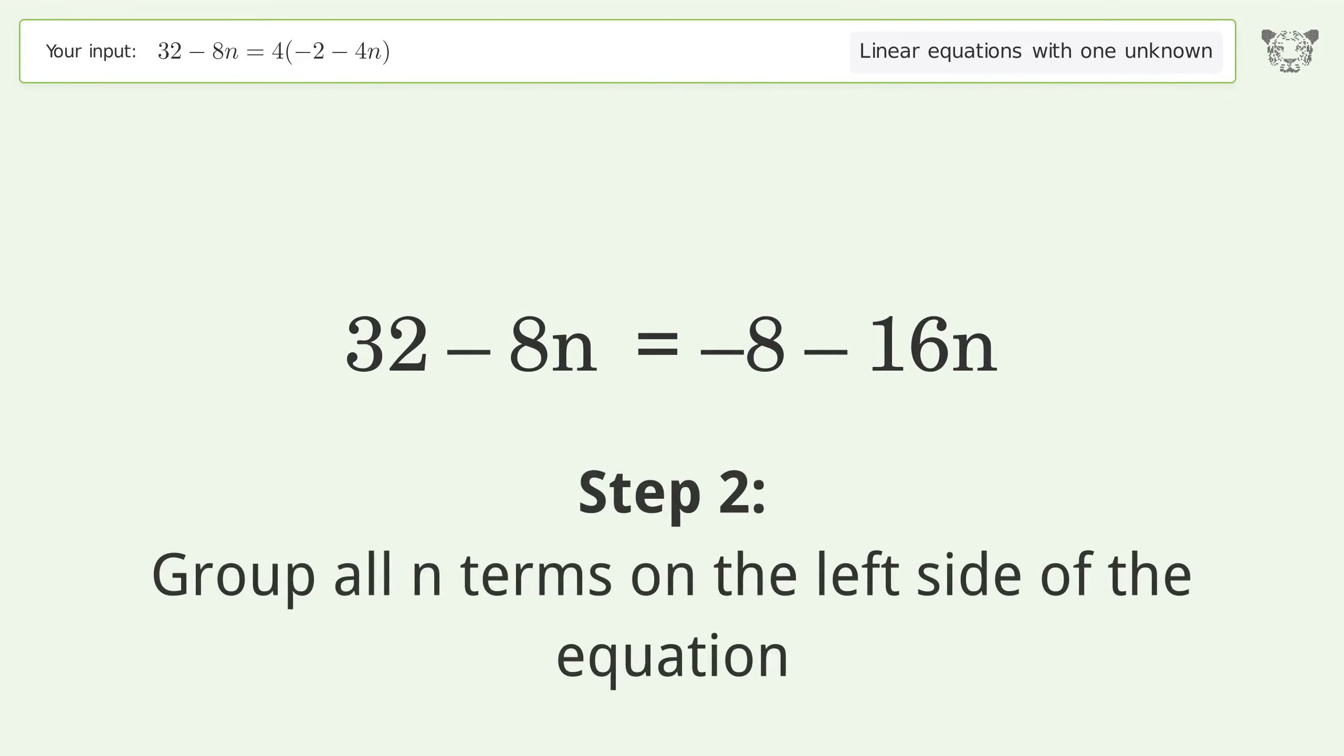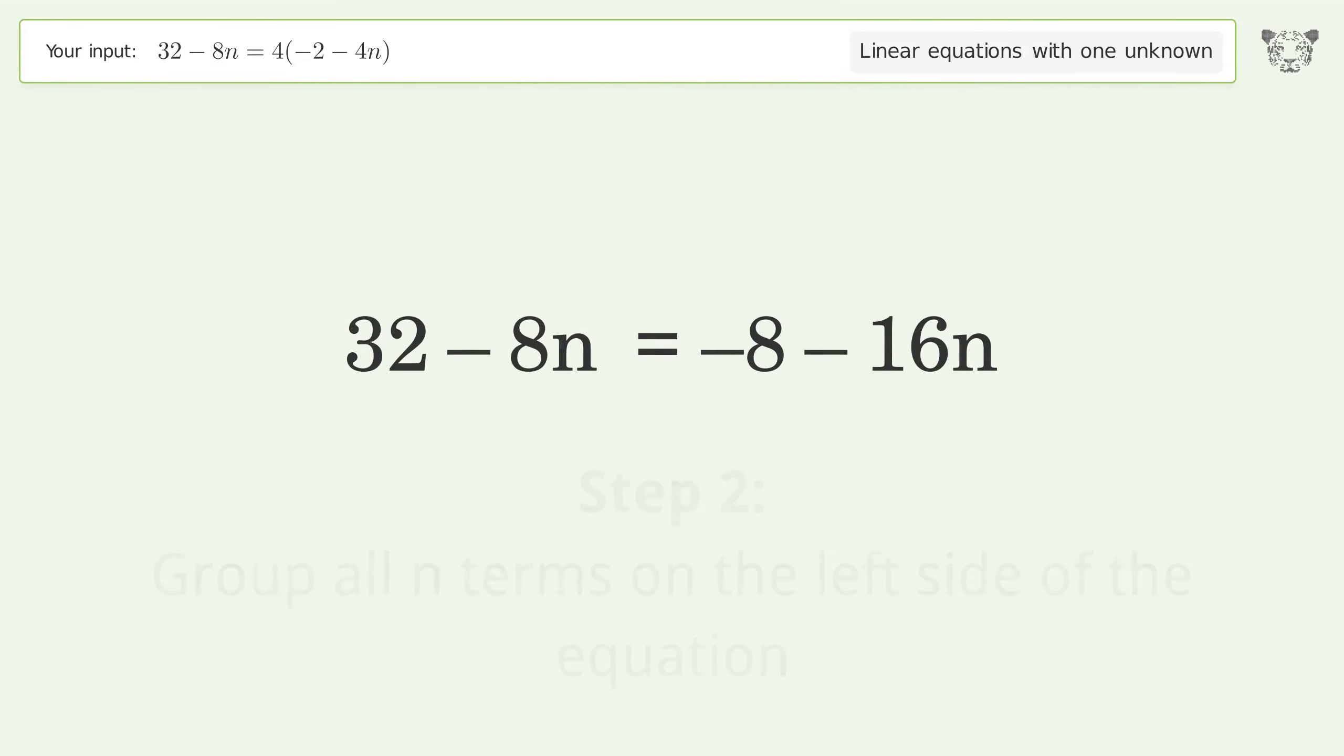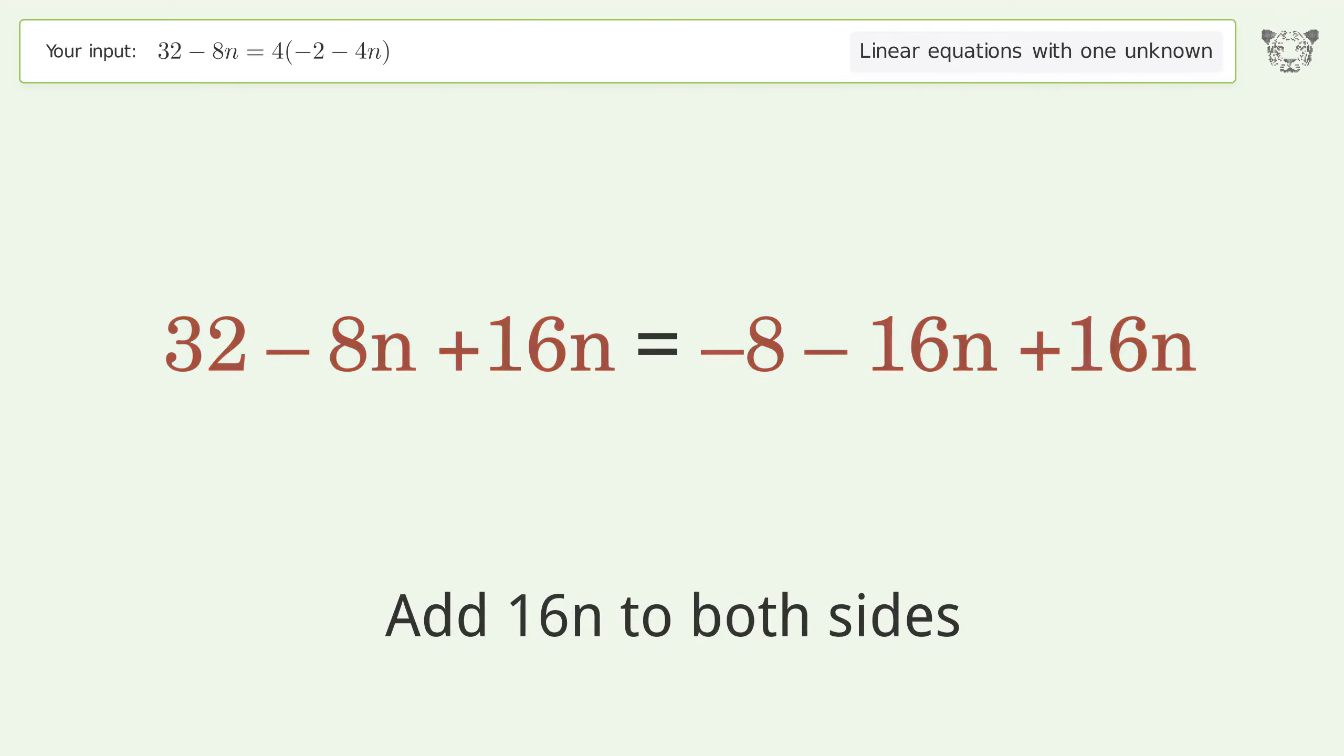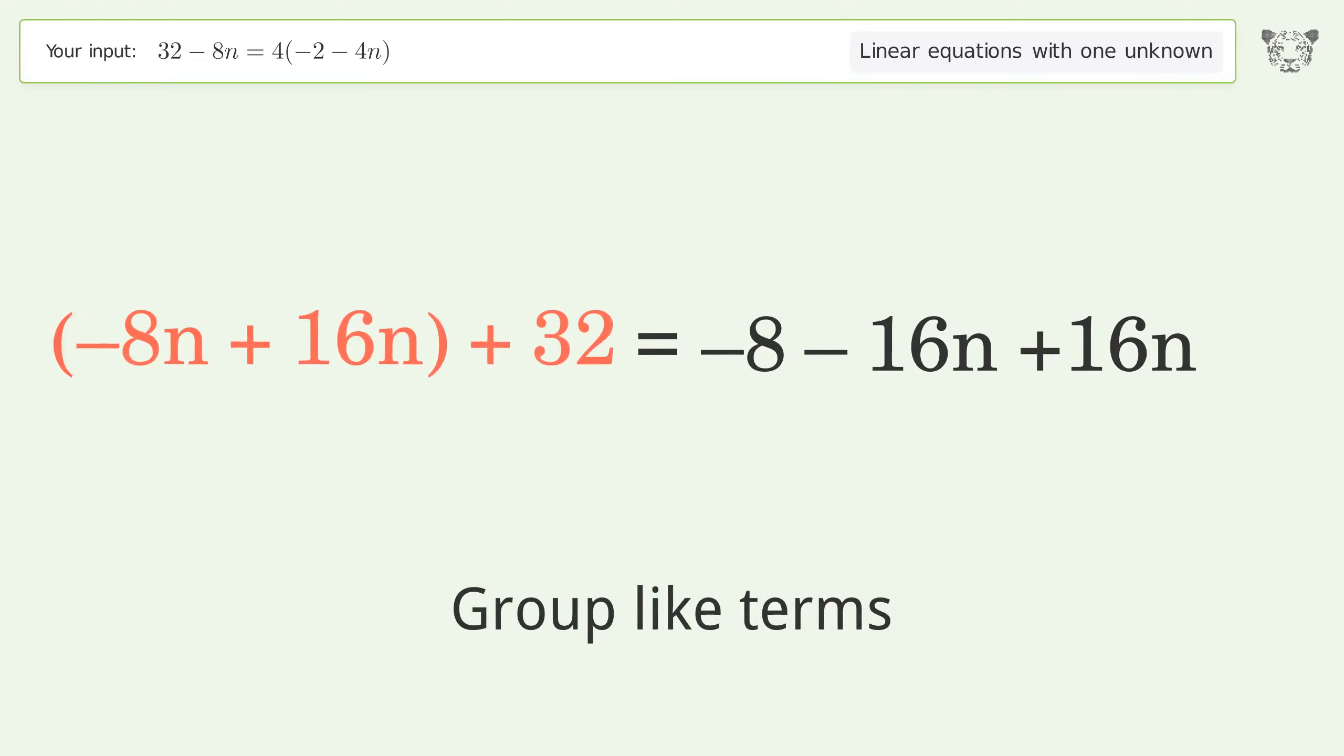Group all n terms on the left side of the equation. Add 16n to both sides. Group like terms.